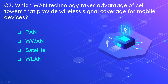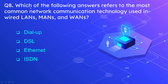Question number 7: which WLAN technology takes advantage of cell towers that provide wireless signal coverage for mobile devices? The options are PAN, WLAN, satellite, and WAN. The correct answer is WAN. WAN stands for wide area network, while WLAN stands for wireless local area network. Since cell towers and mobile devices communicate over a wide area network, wireless WAN is the correct answer.